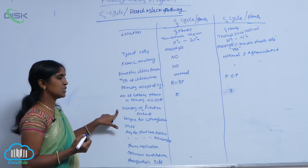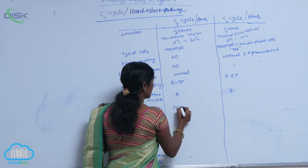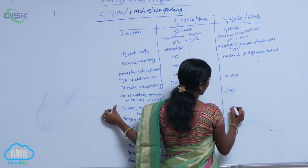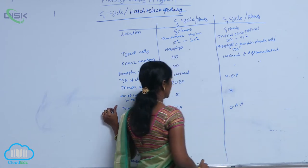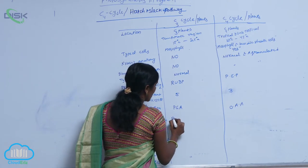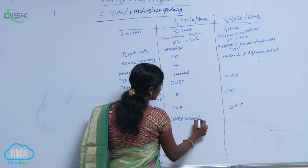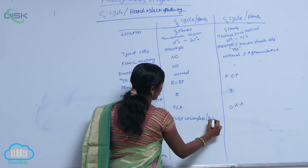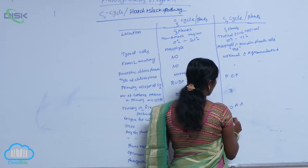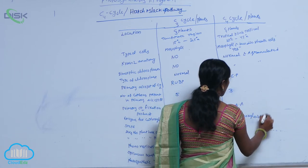What is the first product of primary CO2 fixation in C3? It is PGA — phosphoglyceric acid. In C4, the first product is OAA — oxaloacetic acid. The enzyme for the carboxylation reaction in C3 is RuBP carboxylase, also known as RuBisCO. In C4 plants, the enzyme is PEP carboxylase.